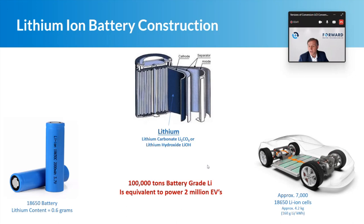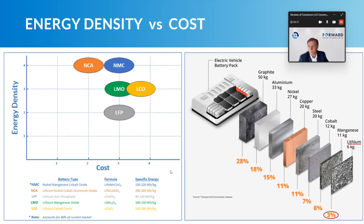Multiply that by the millions of vehicles expected to come online by 2030, and you have a huge disconnect between supply and demand — there's not enough lithium being supplied to meet demand by 2030. There's about 100,000 metric tons being produced globally right now versus a projected demand of about 2 to 3 million metric tons by 2030, depending on who you speak to. Massive compound annual growth between 20 and 30 percent.